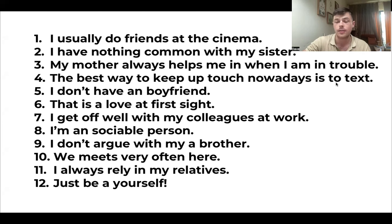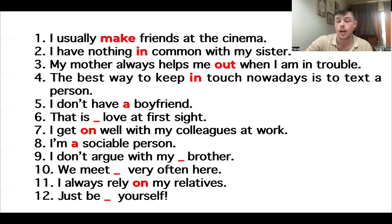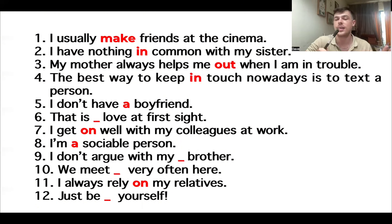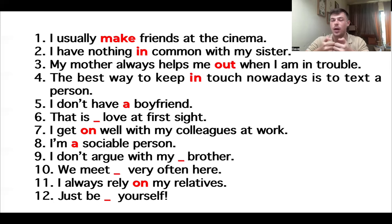Wonderful. I hope you finished that. Let's look at the answers. Number one: I usually make friends at the cinema. Well done if you got that right. It's not 'I usually do friends' — no, make friends. Two: I have nothing in common with my sister. We are very different. We have different interests. Nothing in common. Three: my mother always helps me out when I'm in trouble. Helps me out. Four: the best way to keep in touch nowadays is to text a person. So sending a message is a really good way to keep in touch.